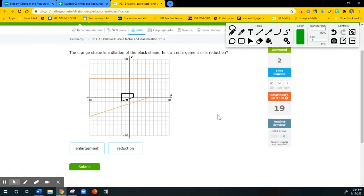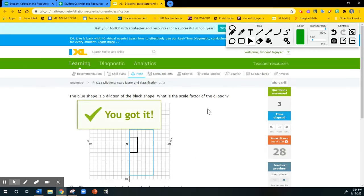Same strategy here. We are looking at the orange shape, which is the dilation. So the orange is the new. So apparently, it got larger. The original is the black. It got larger, and it becomes the orange. So we are going to say enlargement.